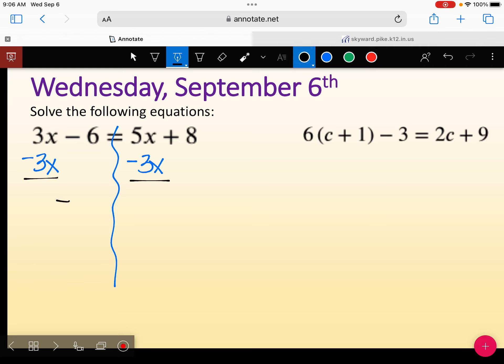So that'll be negative 6 equals 2x plus 8, and then what? What's my next step with that 8? Subtract it, good.